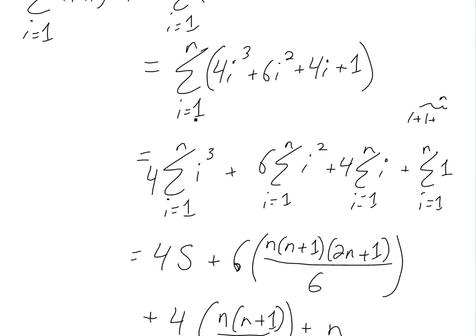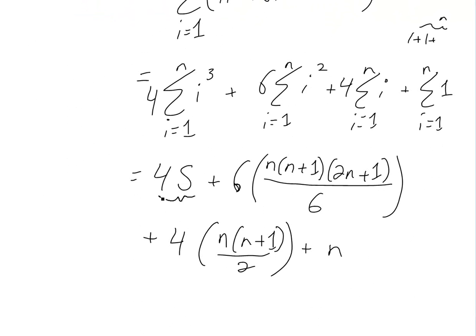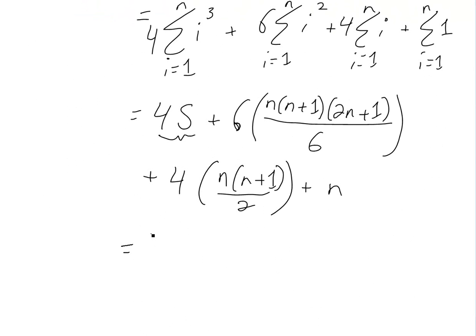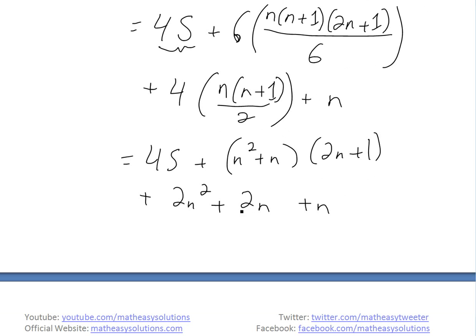So then we have two formulas for the telescoping sum. This one and the one with S, so all we do is equate them and solve for S. Before we do that, let's simplify this side first. There's going to be 4S, then the 6s cancel, and then plus — multiplying inside — we're going to have n squared plus n times 2n plus 1. And this one is going to be plus 2n — this cancels — it's going to be 2n multiplied inside, giving 2n squared plus 2n plus n.